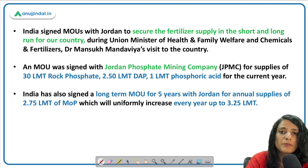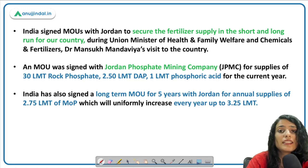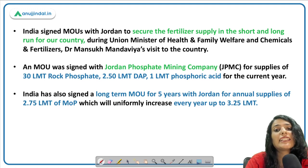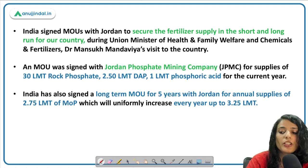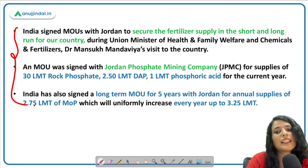Many Indians also do business in Jordan in Qualified Industrial Zones, where Indian textile entrepreneurs have set up million-dollar worth textile industries and employ people of Jordan. There are also many other sectors where India and Jordan collaborate. This background was given so that it is easy to remember the context of the news.